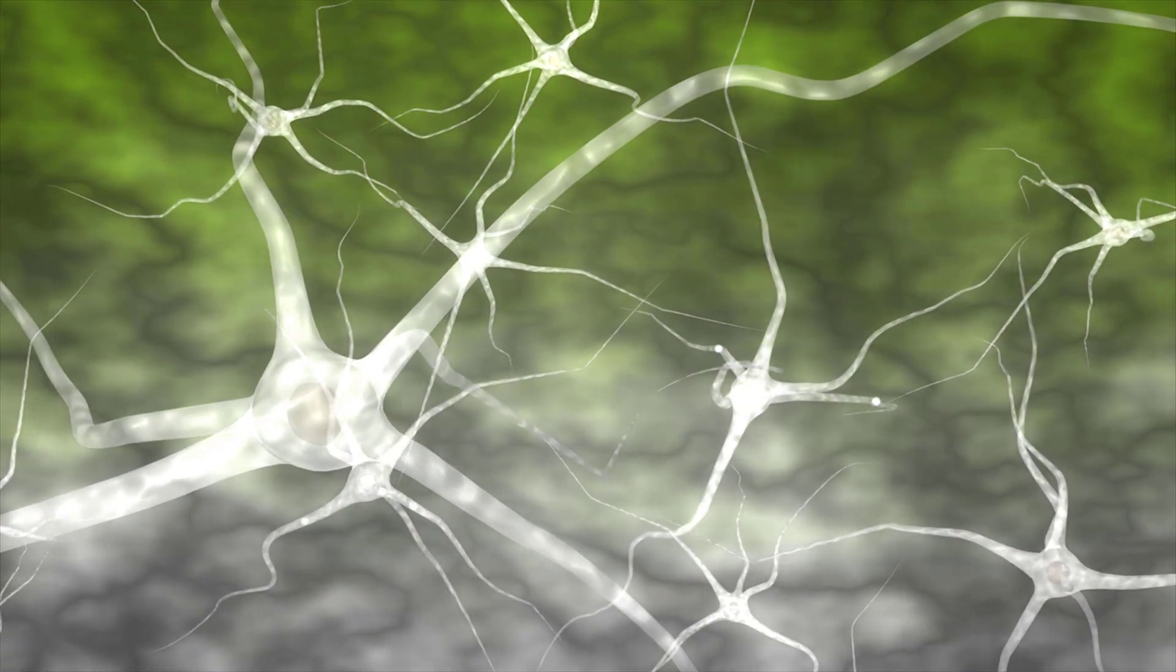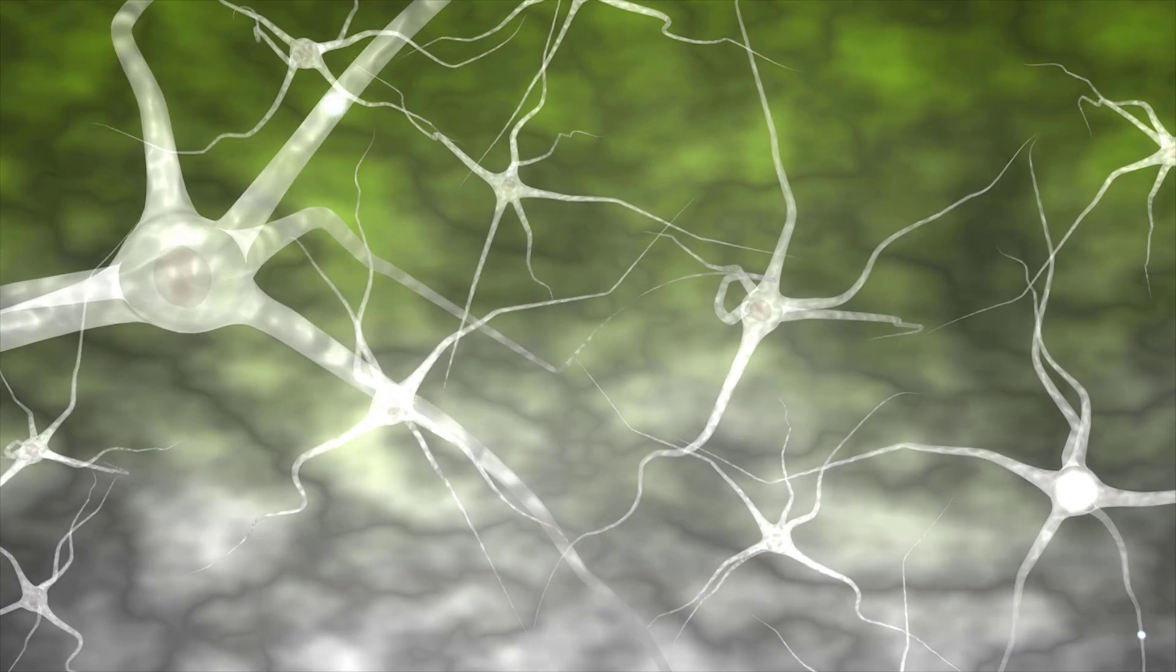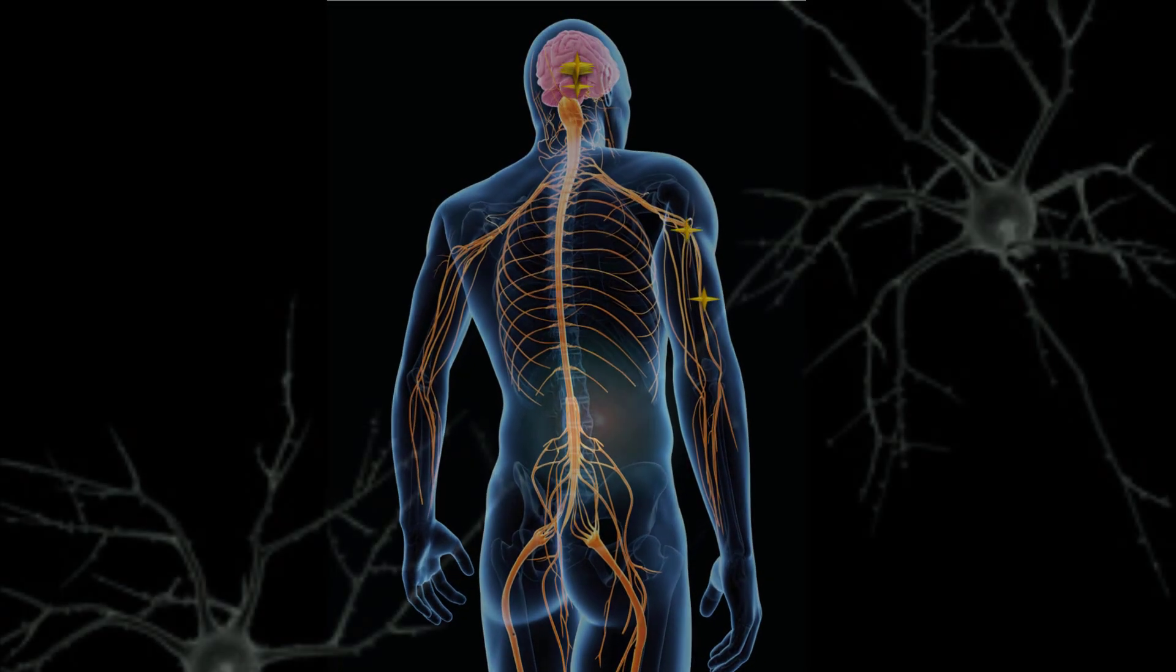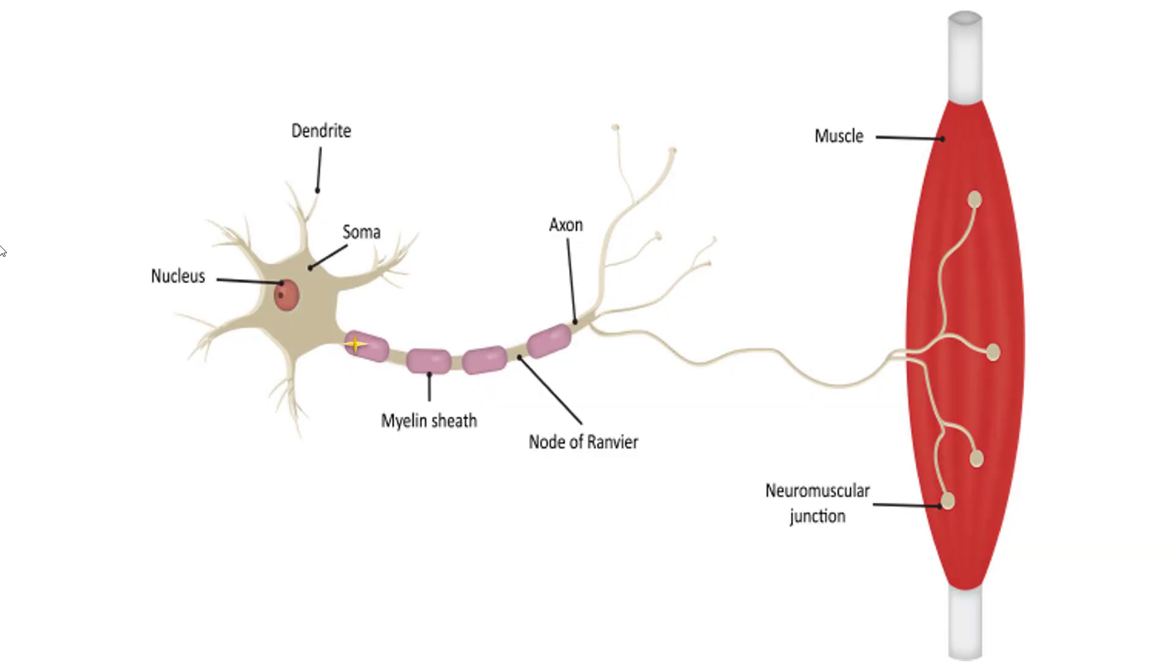This electrochemical signal is sent from the brain down the spinal cord to the motor neuron at the neuromuscular junction. The motor neuron then fires an action potential.